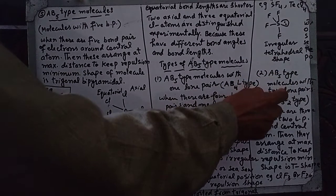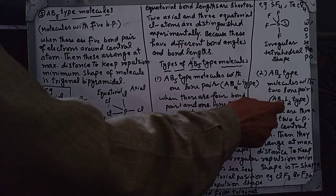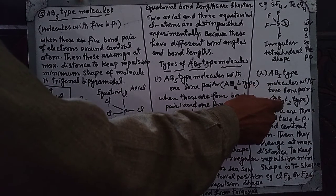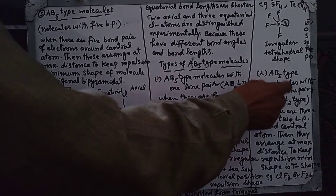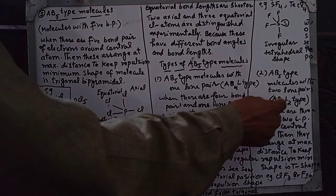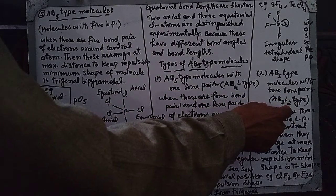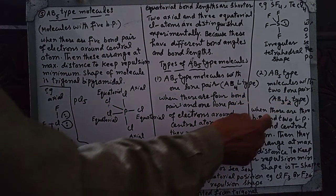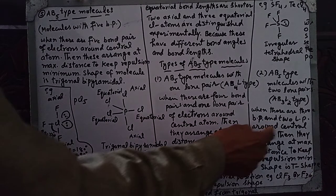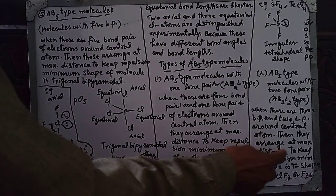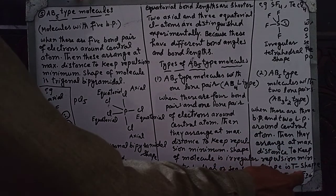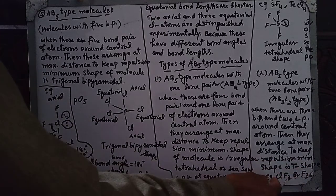AB3L2 type molecules have three bond pairs and two lone pairs around the central atom. These arrange at maximum distance to keep the repulsion minimum. The shape of the molecule is T-shape.